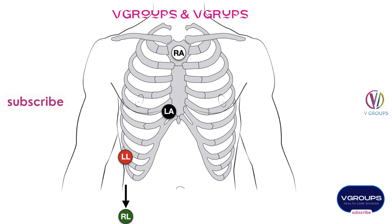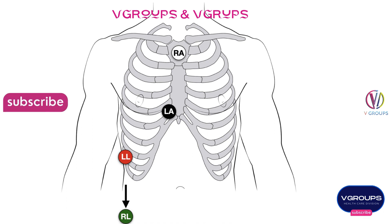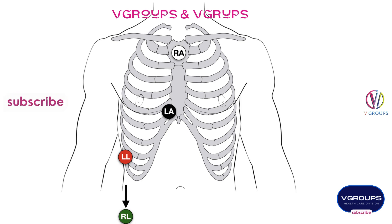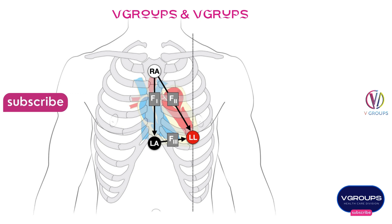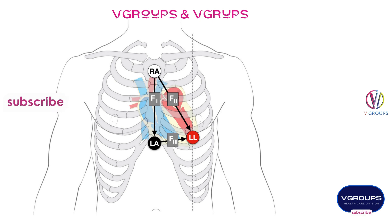For proper lead placement, clean the areas where the electrodes will be attached to ensure good skin contact. Ensure that electrodes are firmly attached to the skin. Avoid placing electrodes over bony prominences, as this may cause artifact or discomfort. Confirm proper placement by checking for characteristic waveforms and intervals on the ECG monitor.